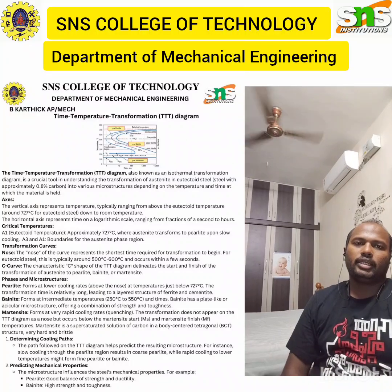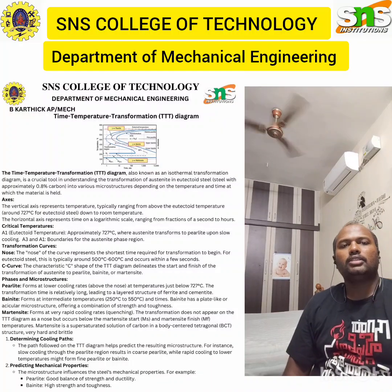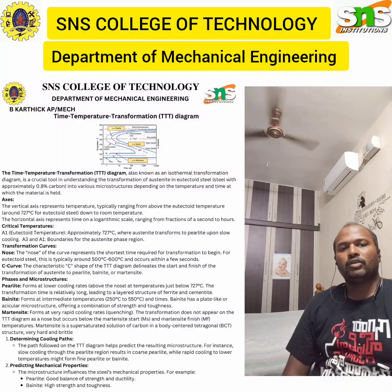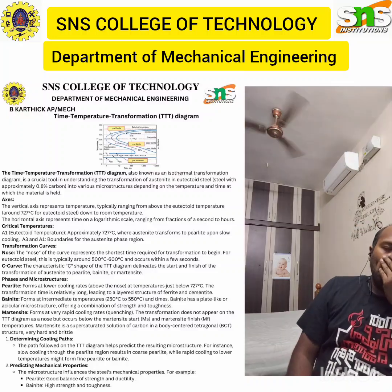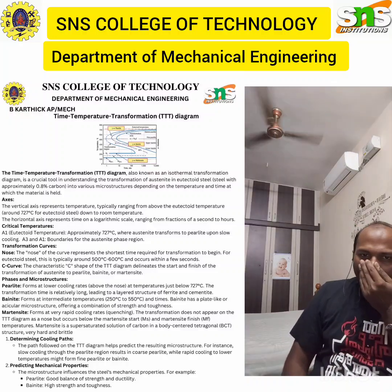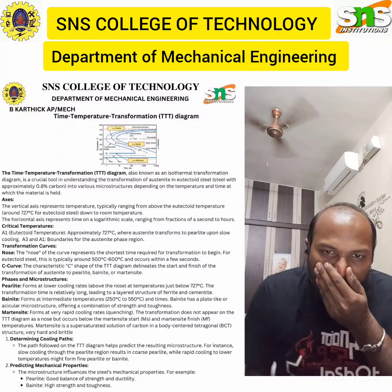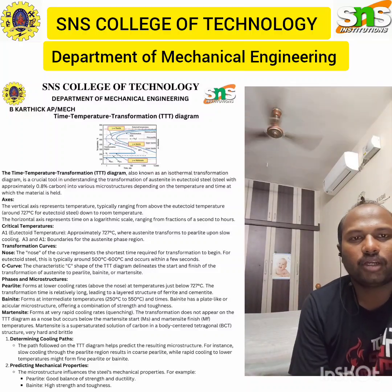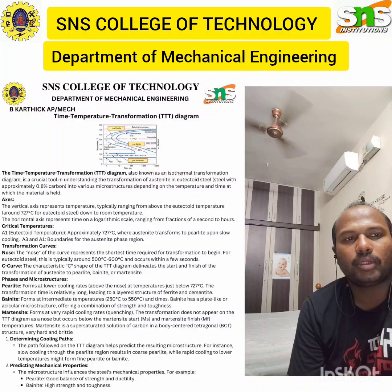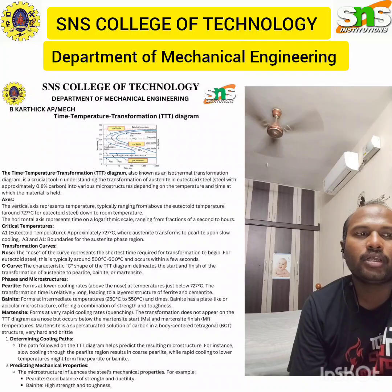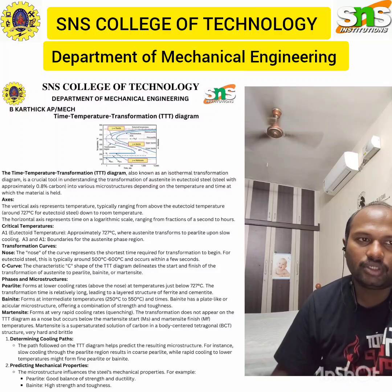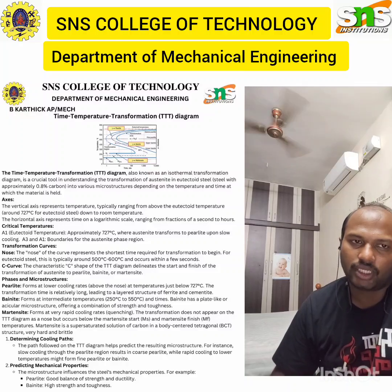The A3 and A1 are the boundaries for the austenite phase region. A key feature of the TTT diagram is the transformation curve. The nose of the curve represents the shortest time required for transformation to begin. For eutectoid steel, this typically occurs around 500 to 600°C within a few seconds.